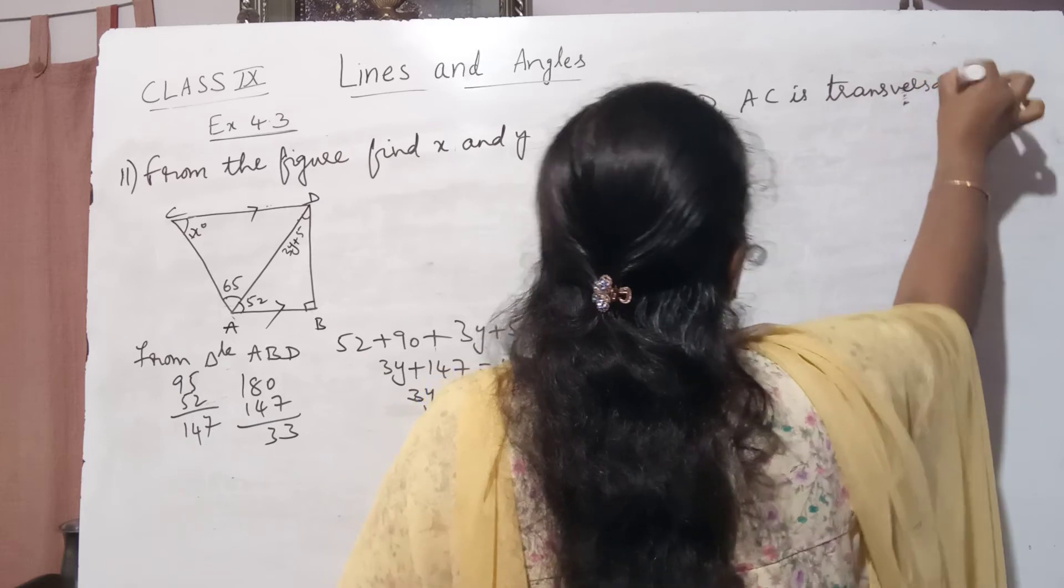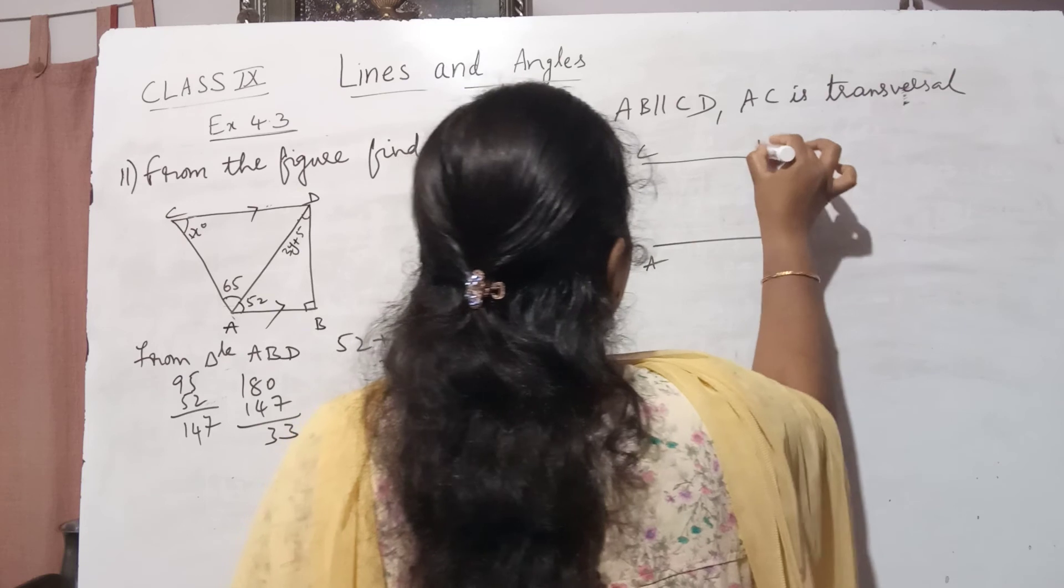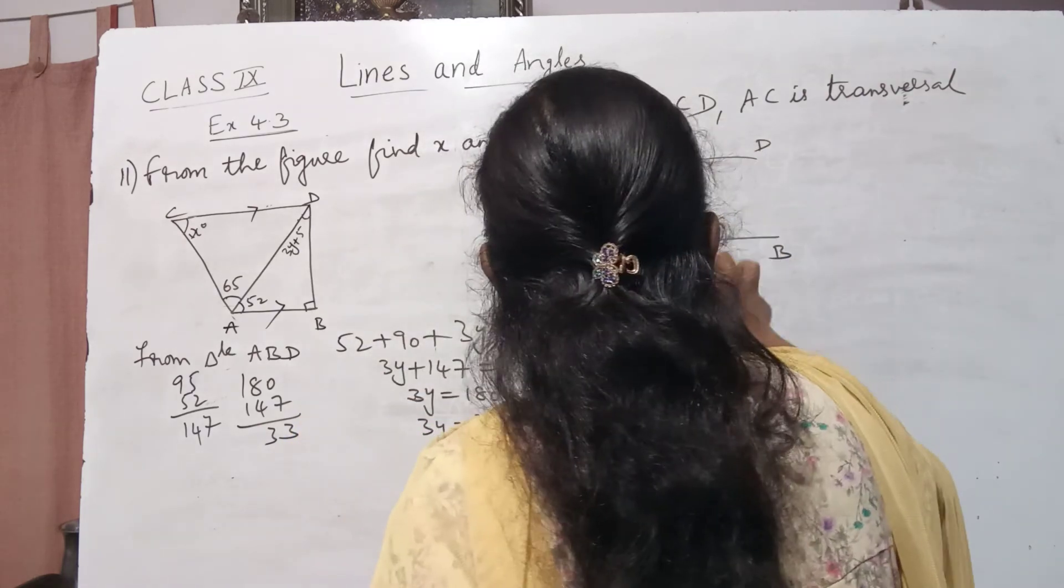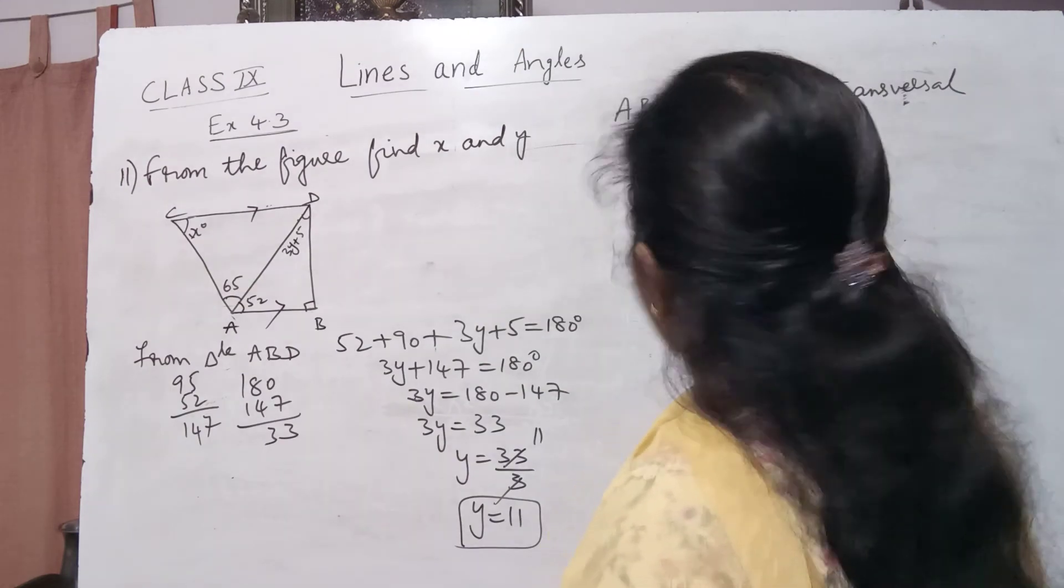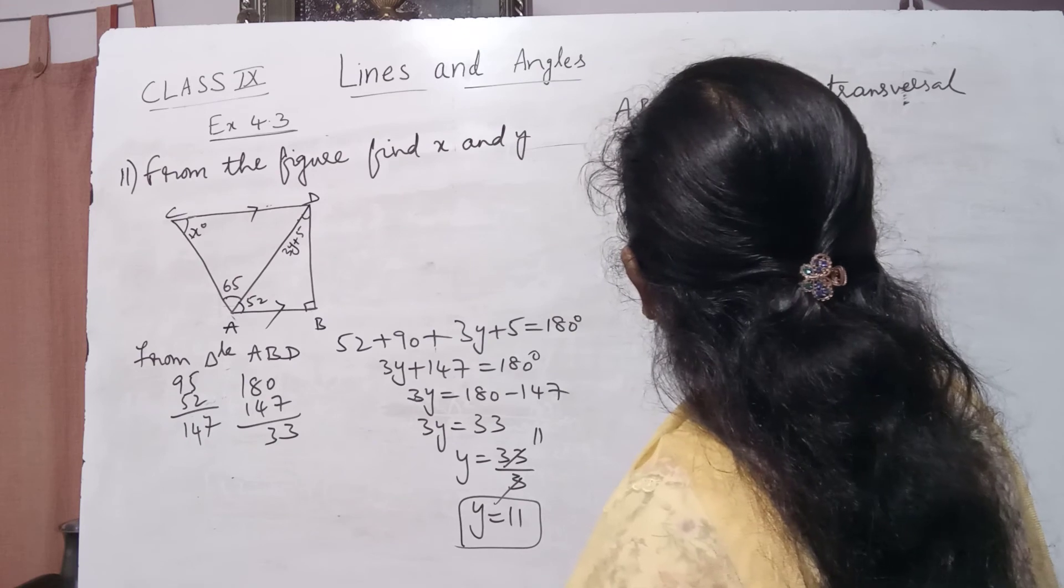So what you will get: this is AB, CD, this is the transversal which is present like this. Now clearly this is x degrees, and this one, this entire angle, this is 65 plus 52.